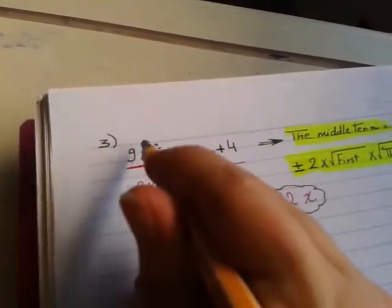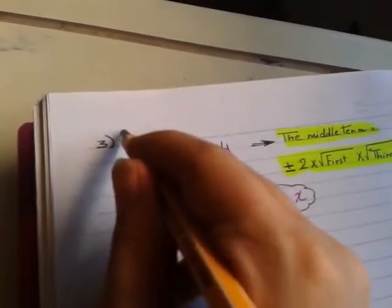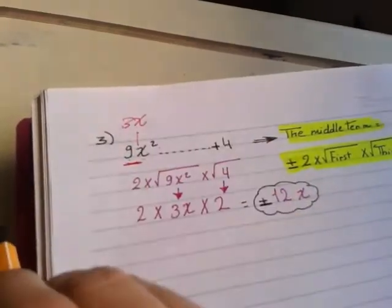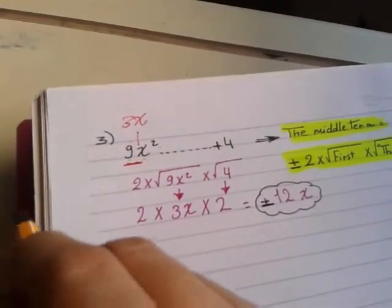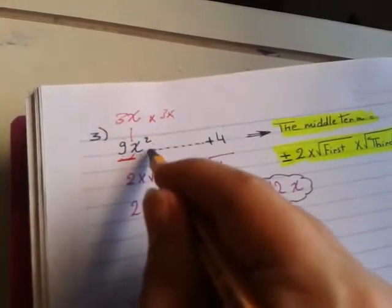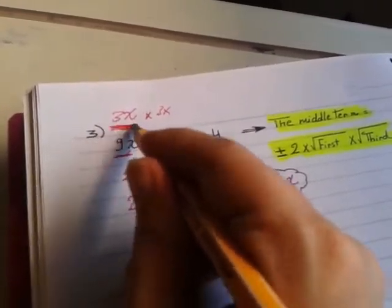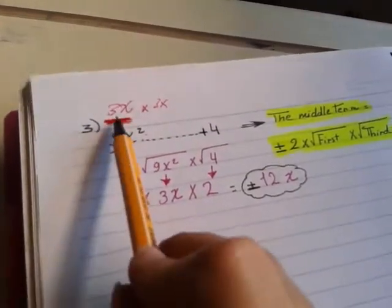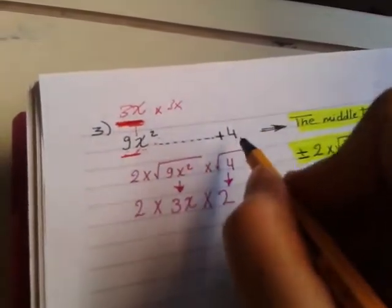Root of the first here, 9X². It means 3X. From where did we get this? From 3X by 3X equals 9X². So the root, it means take one of the two similar terms. So the root is 3X. Here what is the root of 4? What are two numbers product give me 4? 2 by 2. So the root, I will take 1, 2.